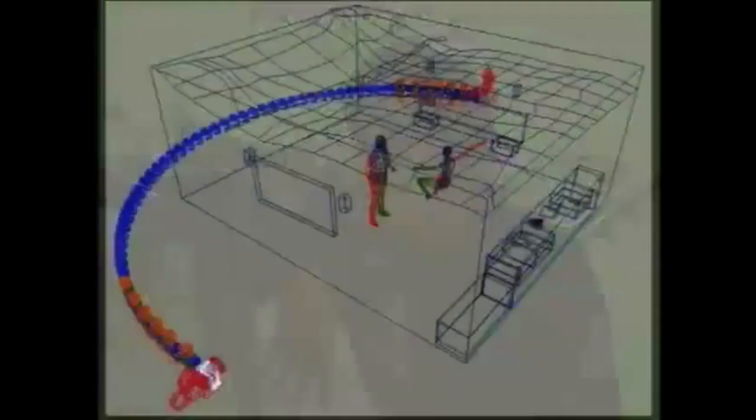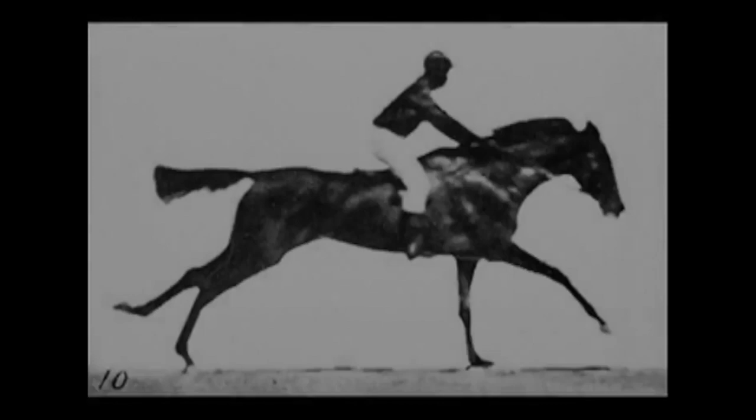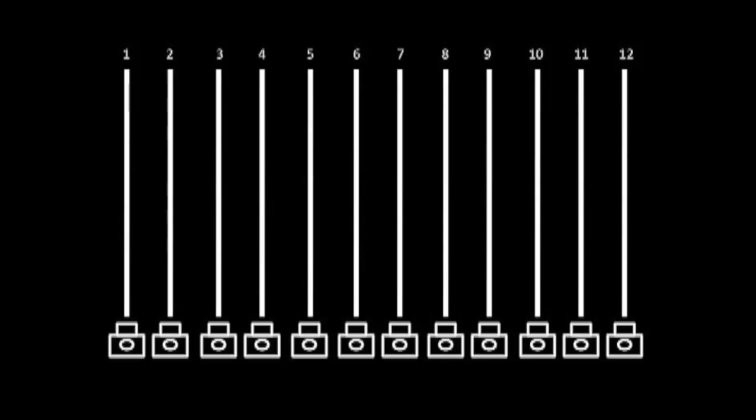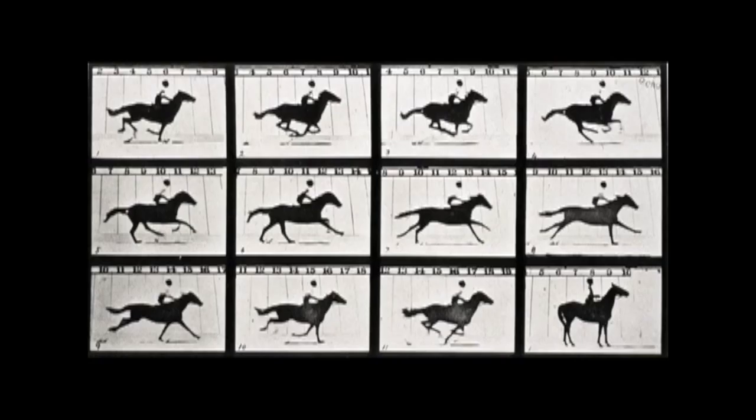Each camera films one second of a clip. A connection can be made between Edward Muybridge and the bullet time effect. Muybridge, a pioneer for motion photography, photographed a horse riding event with 12 different cameras in order to prove that all four hooves of a horse leave the ground simultaneously.